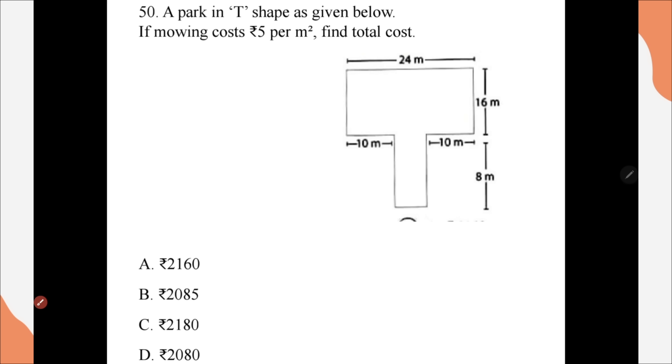Question number 50, a path in T shape as given below. If moving cost 5 rupees per meter square, find the total cost. Correct option is option D, rupees 2050.